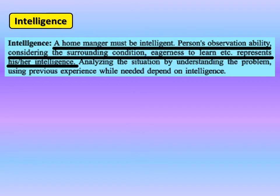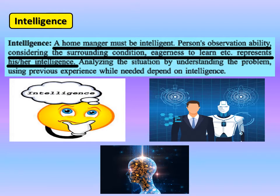The first quality is intelligence. A home manager must be an intelligent person. A person's observation ability, considering surrounding conditions, and eagerness to learn represent his or her intelligence. Analyzing the situation and understanding the problem depends on intelligence. For bringing success in different activities of the family, the home manager must be intelligent — whether enhancing the beauty of the home, bringing discipline, or taking any decision. A manager can meet all the needs of the family by using limited resources with intelligence.